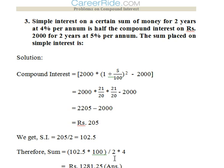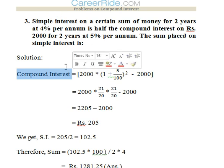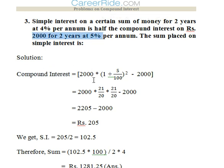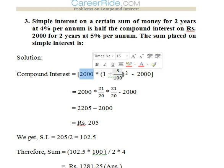Third question: Simple interest on a certain sum of money for 2 years at 4% per annum is half the compound interest on Rs. 2000 for 2 years at 5% per annum. We first calculate compound interest: Amount = 2000 × (1 + 5/100)² = 2000 × (21/20) × (21/20) minus 2000. The compound interest comes out to Rs. 205.